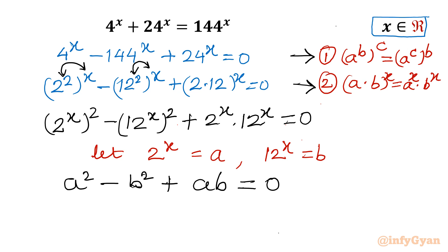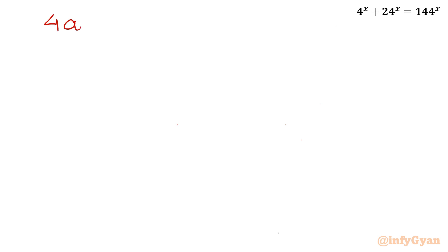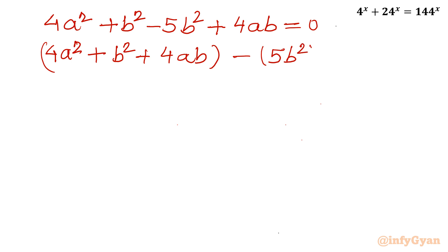Now I will use one manipulation step: I will multiply this equation by 4 on both sides. So the left-hand side becomes 4a² - 4b² + 4ab = 0. Let's split 4b² as +b² - 5b². So we get 4a² + b² - 5b² + 4ab = 0.